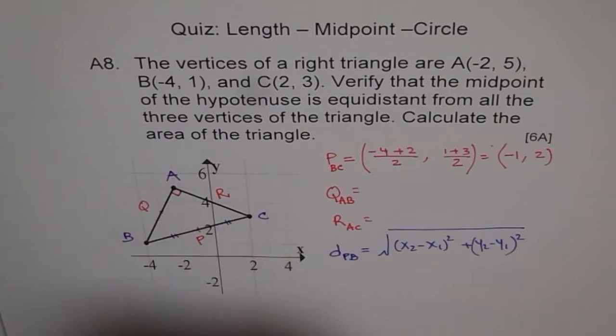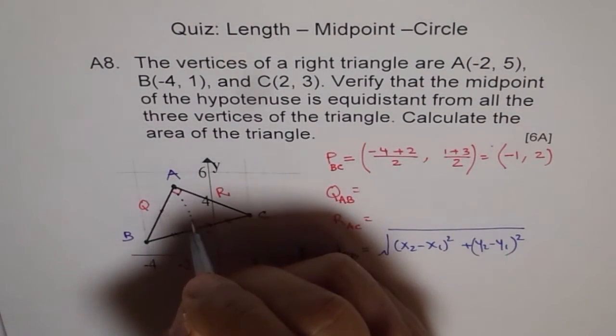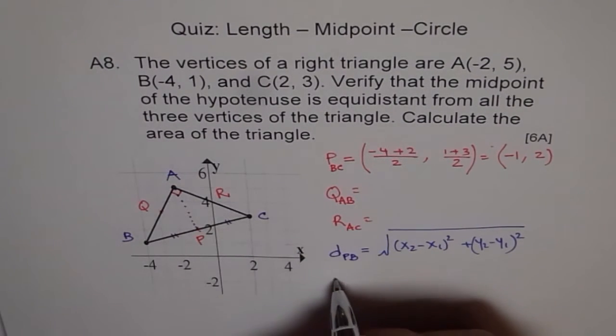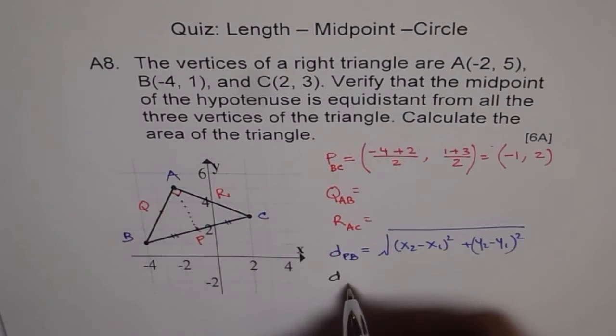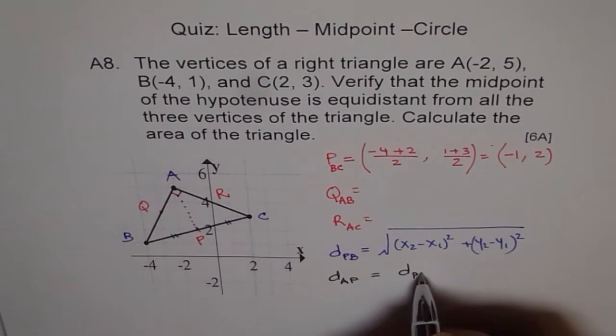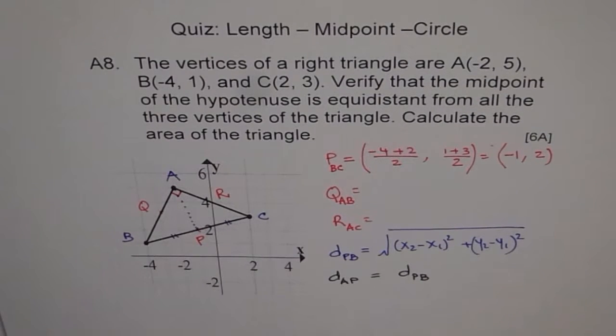You know distance from B to P has to be equal to P to C because P is the midpoint. What you need to do is you need to find this distance, A to P. So you have to prove that distance from A to P is equal to distance from P to B. So that will show that the midpoint of BC, which is the hypotenuse for us, is equidistant from all the three vertices.